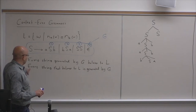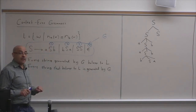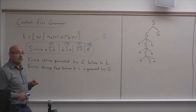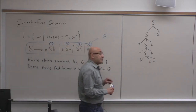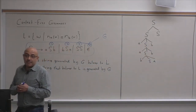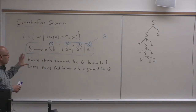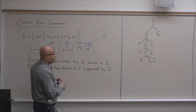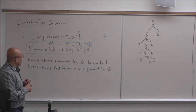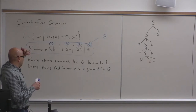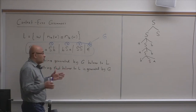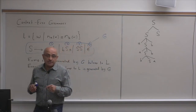To argue that every string belonging to L is generated by G — that this grammar covers all strings with an equal number of A's and B's — we will not give a formal proof, but rather a convincing logical argument that there is no string in the language that does not get generated by this grammar, and that this grammar is general enough to cover all such strings.